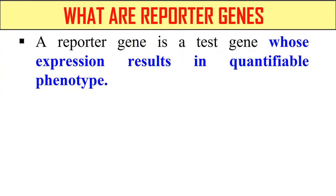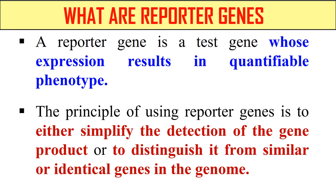Firstly, we should know what are the reporter genes. So a reporter gene is a gene whose expression can be seen with the eyes. In technical terms, the expression results in a quantifiable phenotype, and in simple words, whose expression can be seen with the naked eyes, like in the form of color or fluorescence. The gene whose expression can be clearly visible is known as a reporter gene, and these genes are sometimes also called scorable or screenable genes.